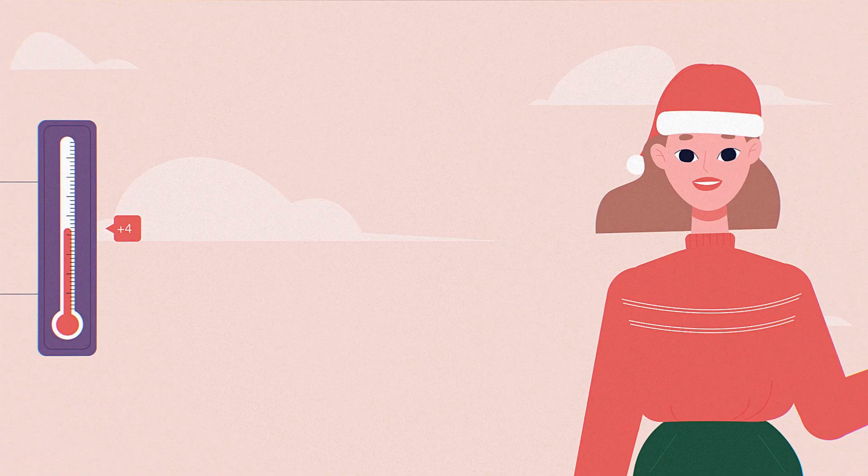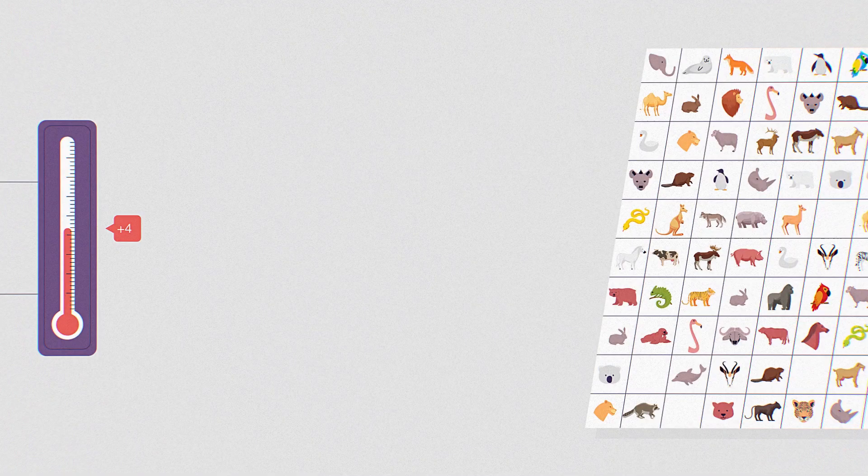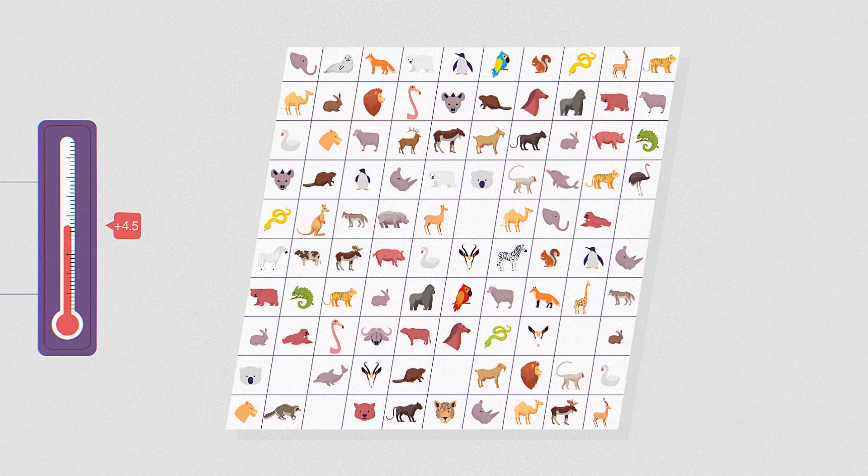At plus 3 degrees, droughts will last an average of 10 months, same amount of time as from New Year's to Halloween.